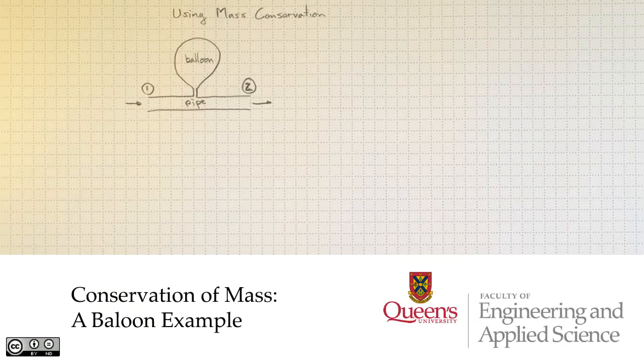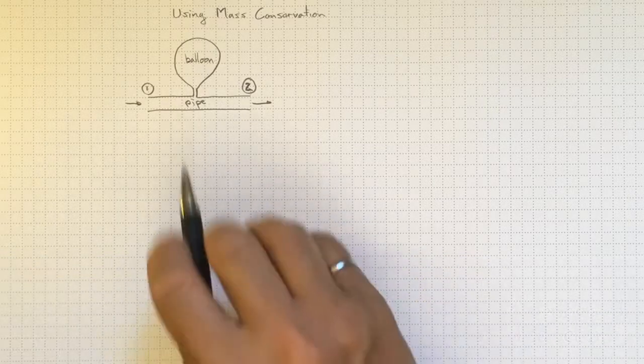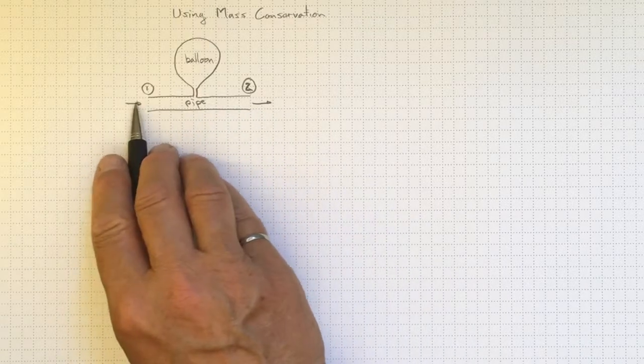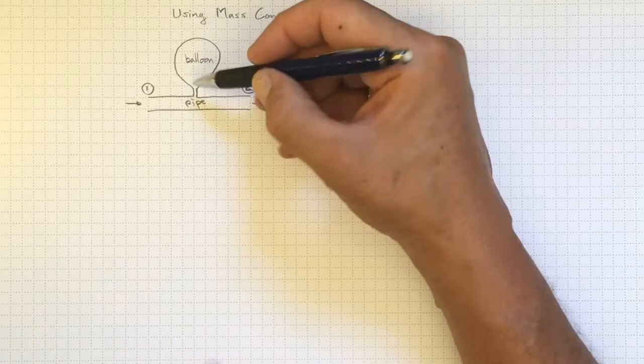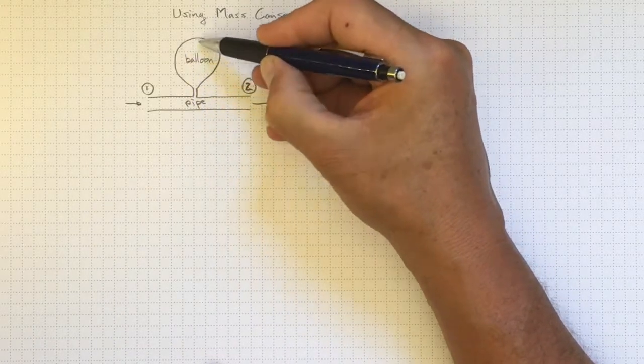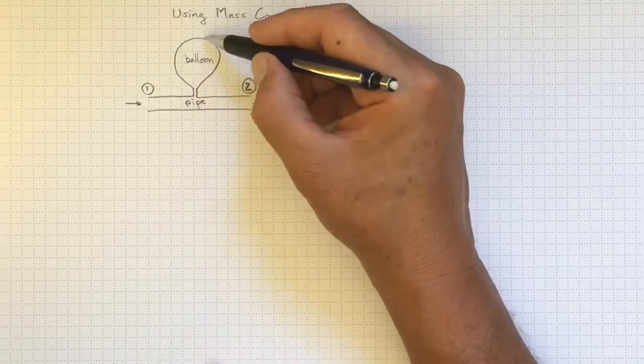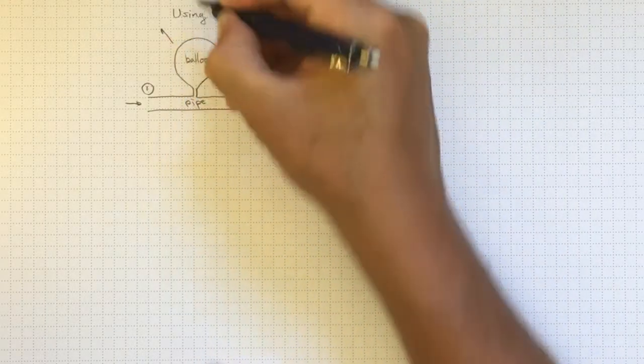Let's look at how we can apply conservation of mass to a practical system so that we can solve some practical problems. Some fluid, let's say water, is flowing in this pipe from location one to location two and there's a balloon attached to the pipe so that if there's a difference in mass flow between these two locations that balloon could be expanding out like this.